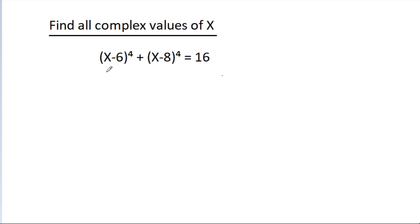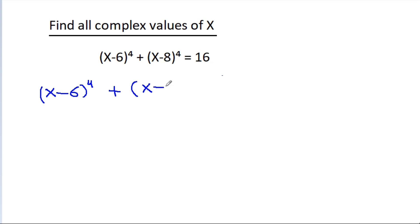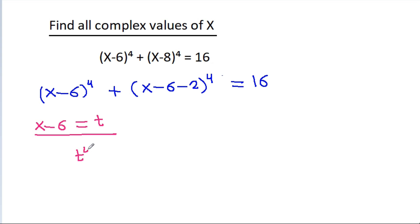In this video, we have been given that (x-6)⁴ + (x-8)⁴ = 16, and we have to find the value of x. We rewrite x-8 as (x-6)-2, and if we let t = x-6, then the equation becomes t⁴ + (t-2)⁴ = 16.